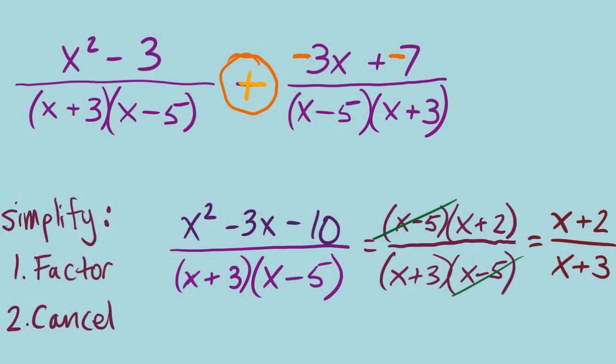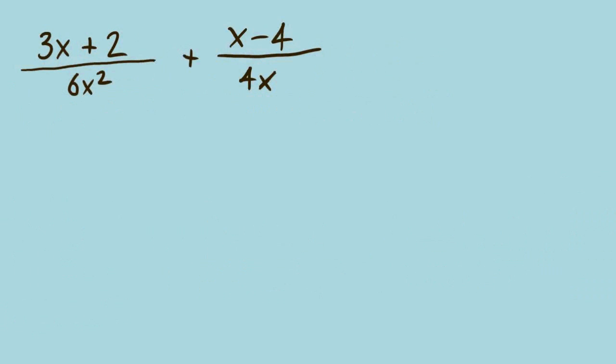After canceling, we're left with just one binomial factor, so we can drop the parentheses — though keeping them is also a correct answer. That is our answer simplified. Now we're going to ramp the problem up a little by looking at an example where the denominators do not already match.